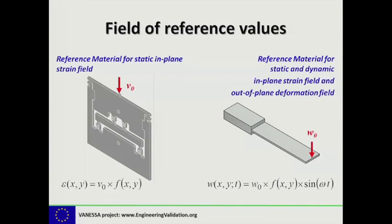Here are two exemplars of how to provide a field of reference values. On the left you see a reference material for static in-plane strain fields, whereas on the right you see a reference material that can be used for static and also dynamic in-plane strain fields and out-of-plane deformation. The idea is that you express your displacement value w or strain value epsilon as a function of x and y across the gauge area, and relate those to a simple factor of nu0 or w0, which is the measured displacement of the top on the left or the measured displacement at the tip on the right, relating it to a field of values f(x,y) describing the strain or deformation. On the right you also have a sinusoidal term for the dynamic use of this material.